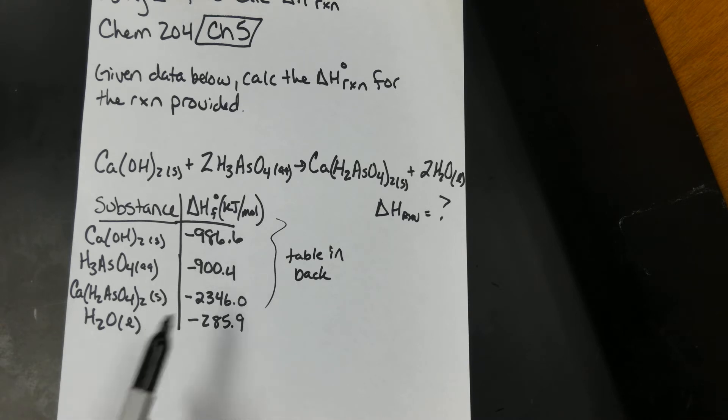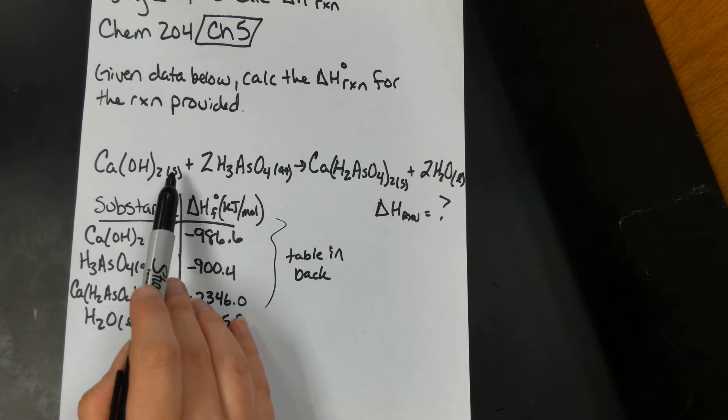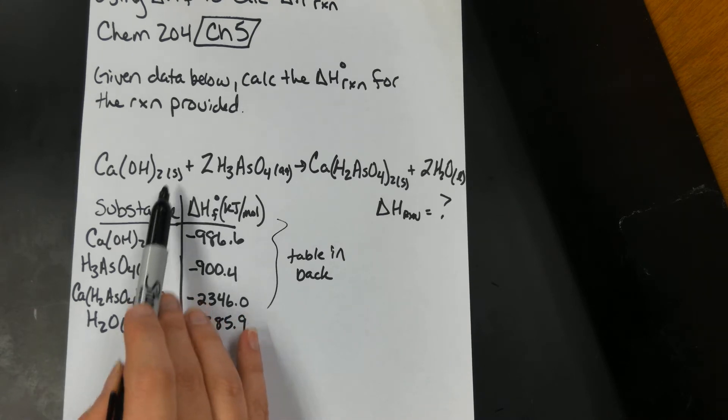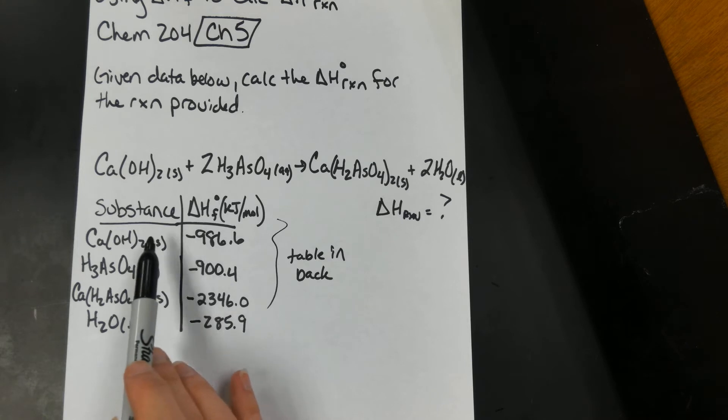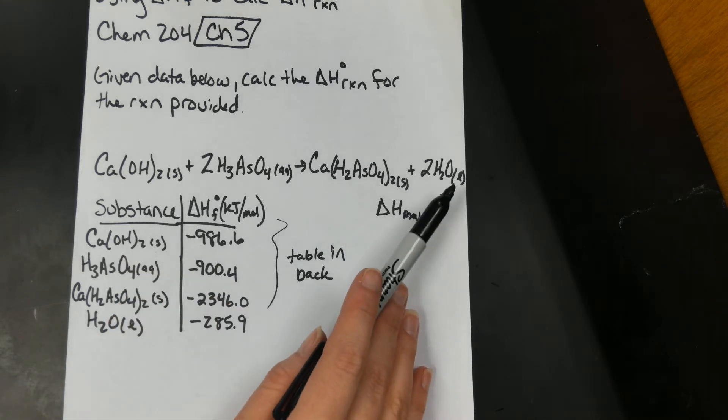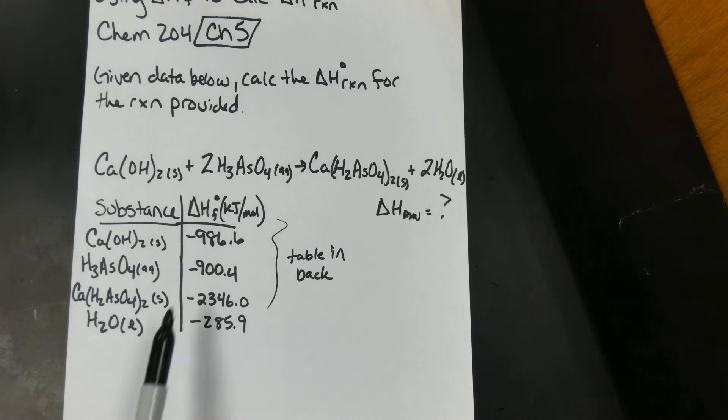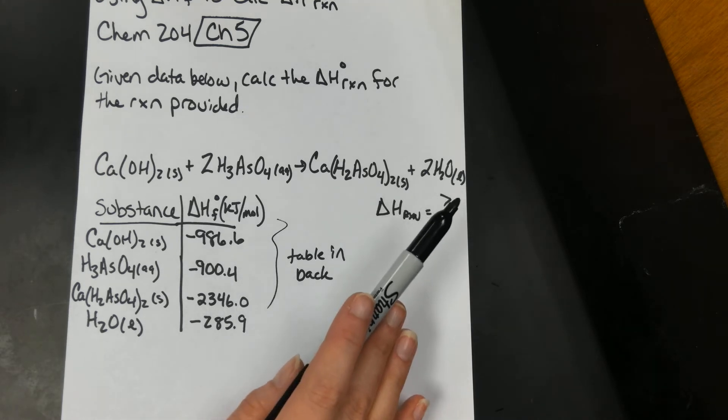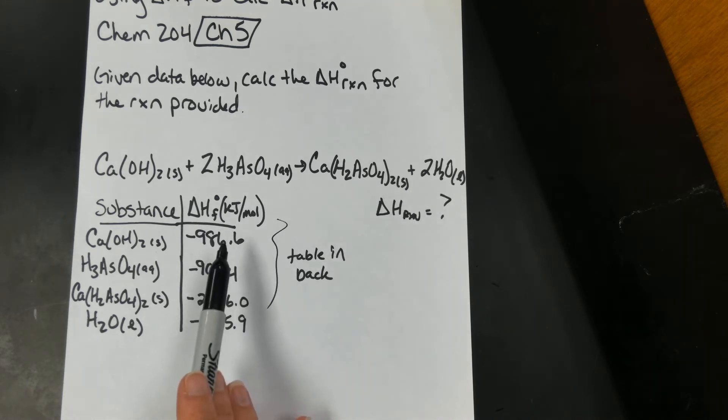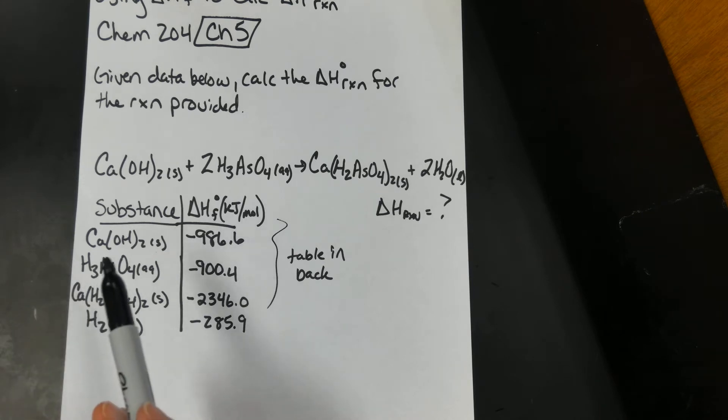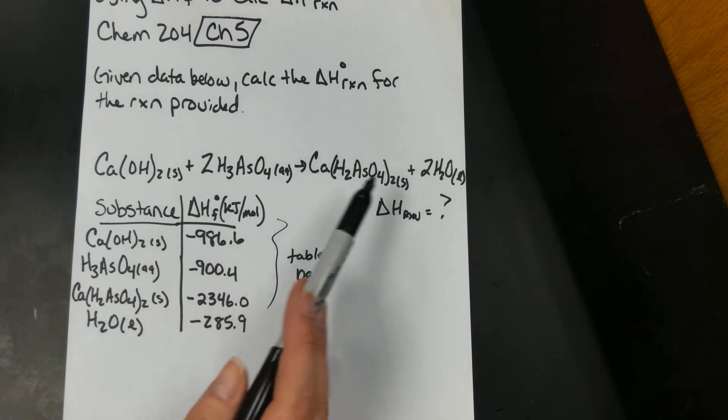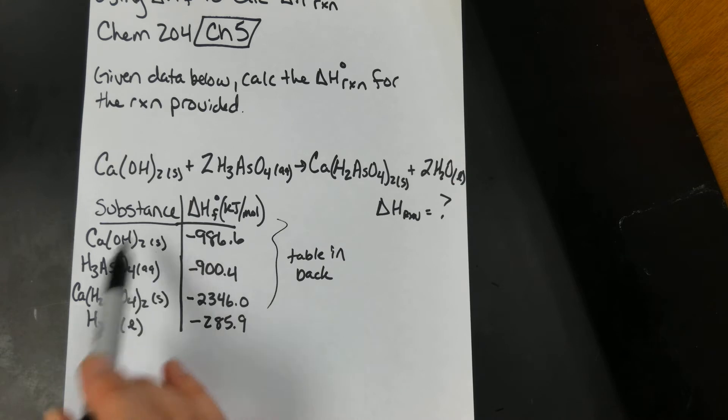One thing that's kind of tricky is make sure that the numbers that you're using have the same states of matter. For water, we could have liquid, gas, or solid, and in this case they're both liquid, so good. But you may have a situation where they try to trick you and give you many different states like aqueous versus liquid versus gas. So make sure that they're in the same states of matter, but in this case they are.